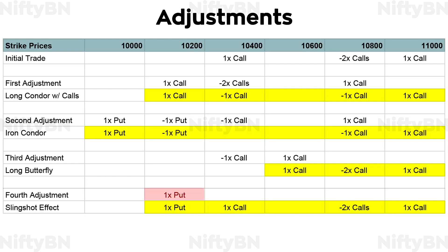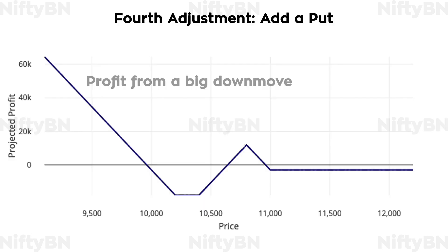The fourth adjustment would be to add a put to the tested side. That is: buy one lot of 30th July 10,200 strike price put. This creates a kind of slingshot effect. Do this adjustment only if you anticipate the price to fall drastically, as any big downward move in the price would make you a good profit, but the risk would be more if the price closes in between the strike price of the put and the lower strike of the original broken wing butterfly at expiration.